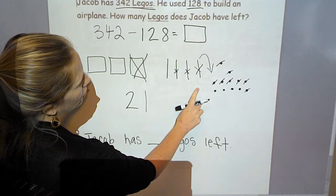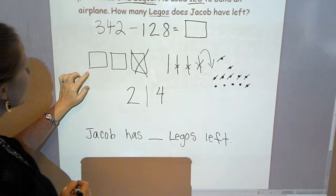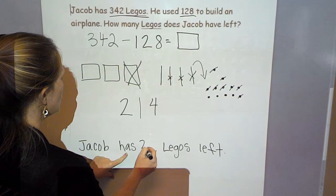And let's count our ones. 1, 2, 3, 4. So let's go back to our sentence that we made before we started. Let's see if it makes sense. Jacob has 214 Legos left.